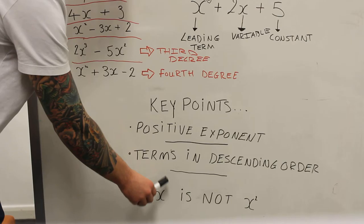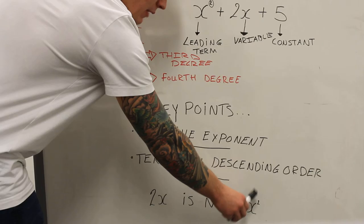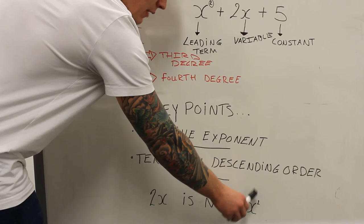x to the power of 4, that is the largest exponent here, that is the leading term. And also, which is very basic algebra, 2x is not x squared, which means that whatever the value of x is, 2x means that x is multiplied by 2, whereas x squared means that the value of x is multiplied by itself.